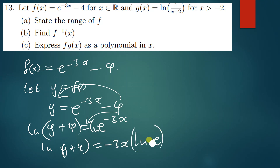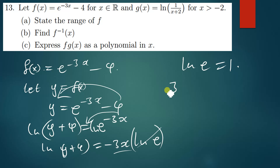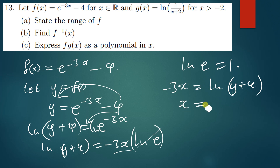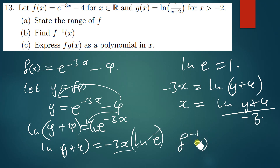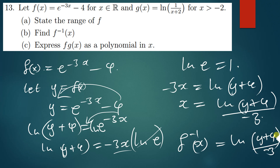Since ln(e) equals 1 — the natural logarithm of e is 1 — we make x the subject. So we have negative 3x equals ln(y + 4), and the value of x becomes ln(y + 4) over negative 3. Hence f inverse of x is simply ln(x + 4) over negative 3.